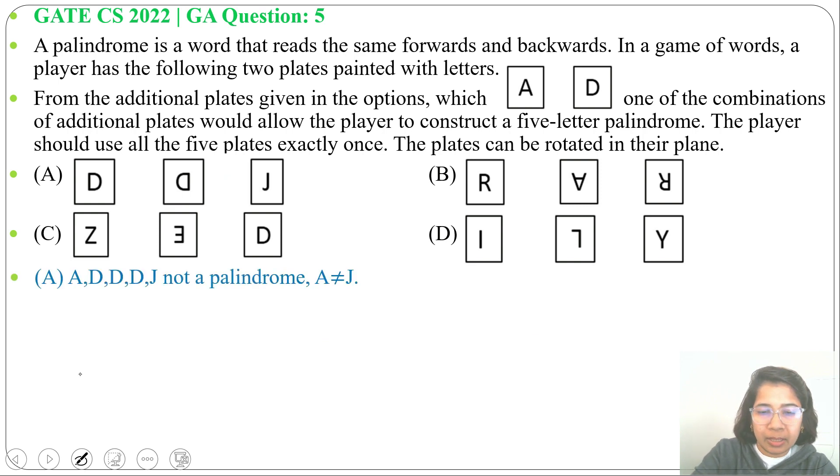Next option B: A, D, now R. After rotation we will get A. After rotation we will get R. Now can we get palindrome from this? Yes. A, R, D, then R, A. I used each plate once. So A, R, D, R, A. From left to right, again from right to left: A, R, D, R, A.